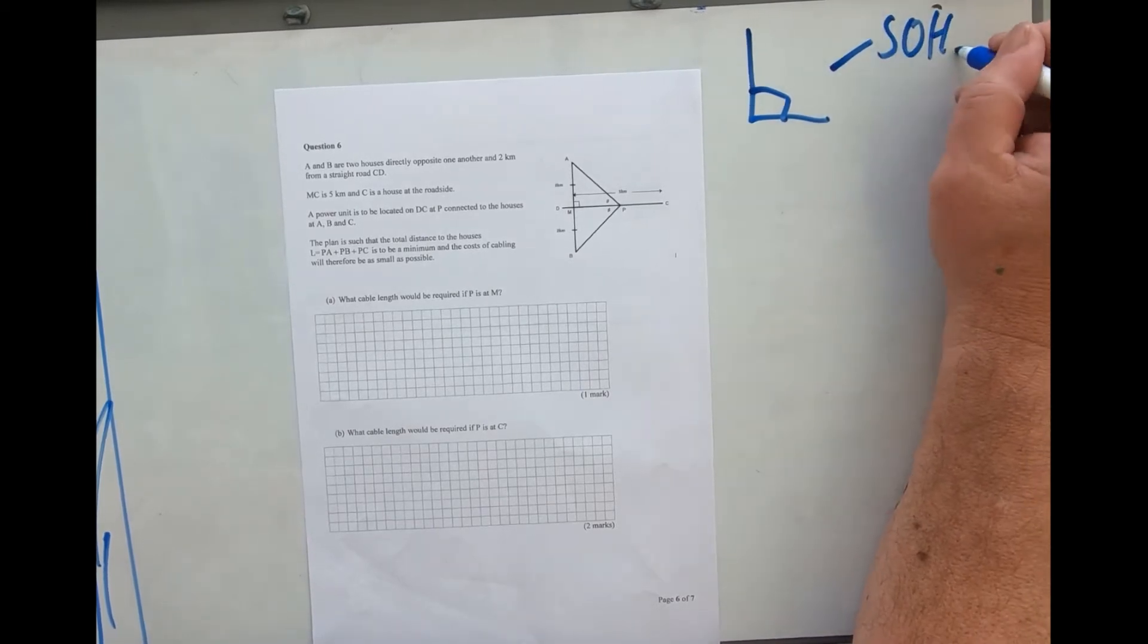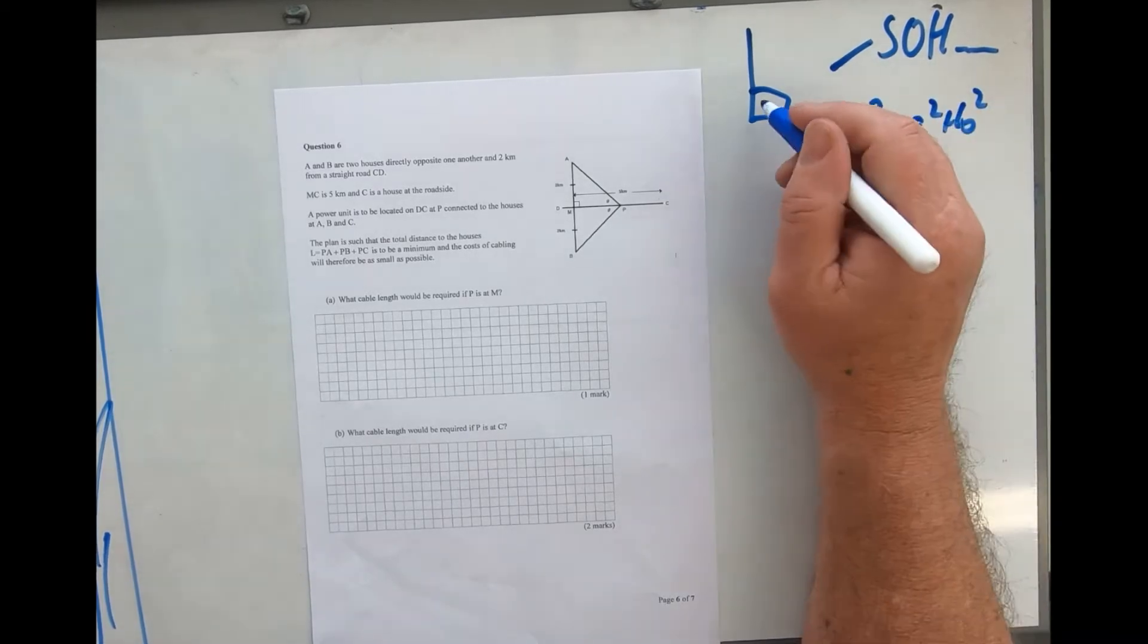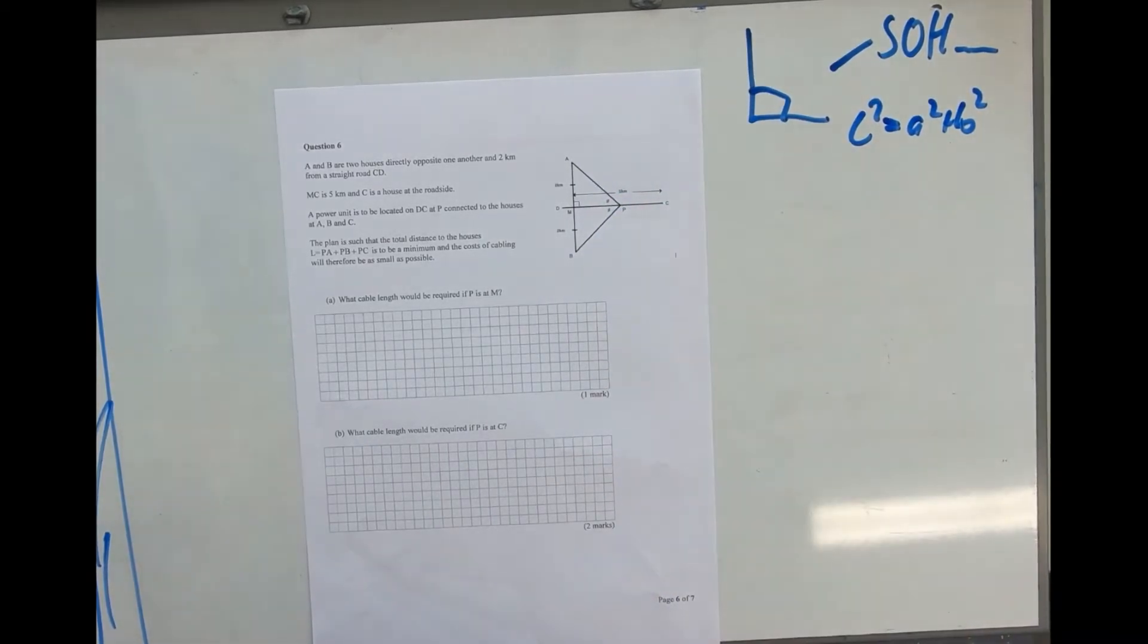So it's going to be SOHCAHTOA or it's going to be c squared equals a squared plus b squared, because I can see a right angle hidden in the picture here.